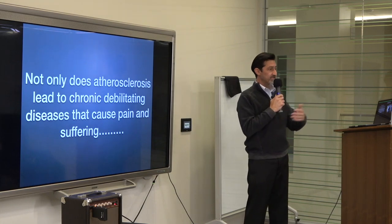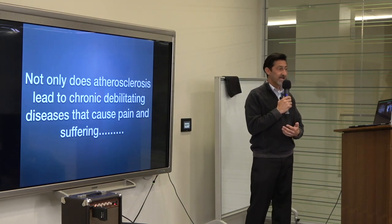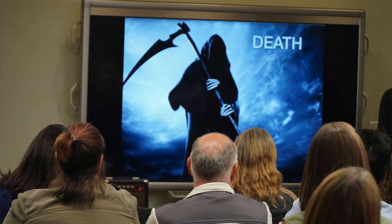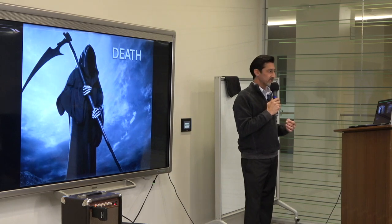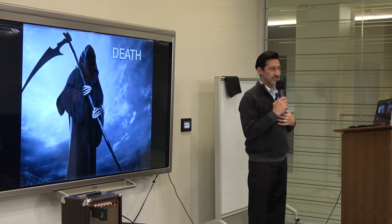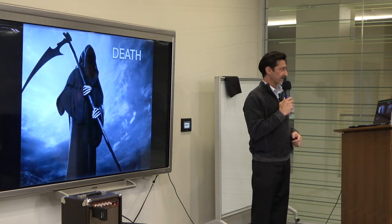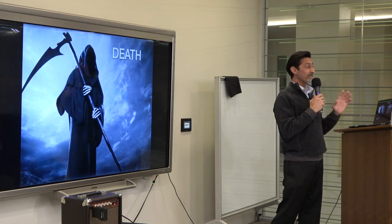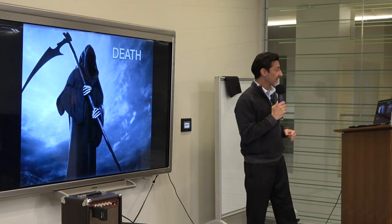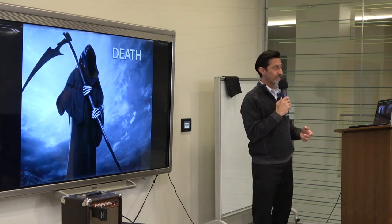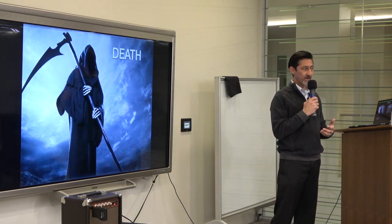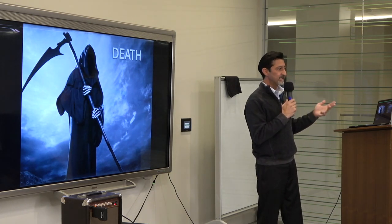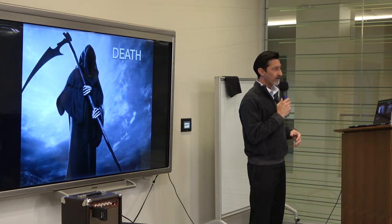So atherosclerosis leads to chronic debilitating diseases that cause pain and suffering and inconvenience in life, but it also leads to the ultimate problem: death. Cardiovascular disease is the number one killer of Americans. About 40% of Americans will experience some form of cardiovascular disease in their lifetime. I don't get to develop long-term relationships with my patients - 50% of my patients are dead in five years. It's not because I'm not a good surgeon, I'm pretty good. But what it is, it's a reflection of all their comorbidities - all the other disease processes and how bad off they actually are. By the time they get on my table, they all have hypertension, diabetes, coronary artery disease, and kidney problems. By the time they get to me, they've already developed a whole host of chronic diseases.